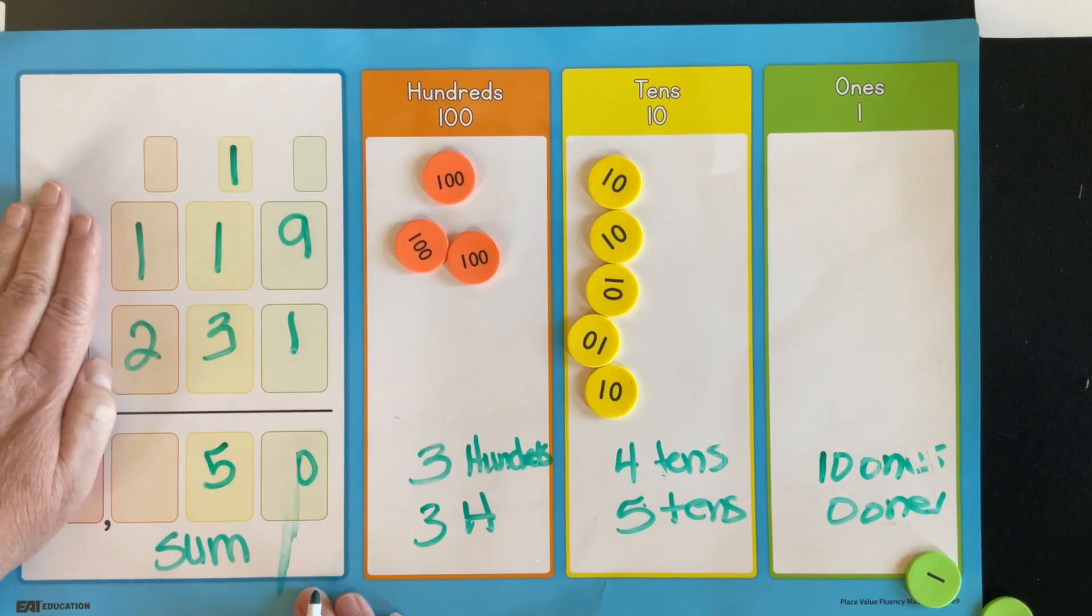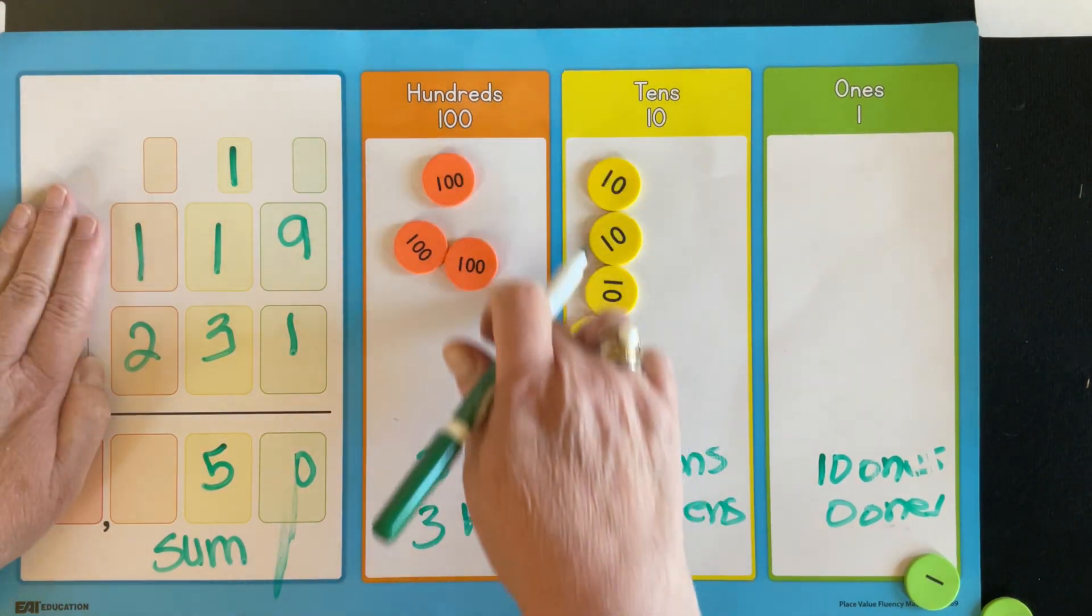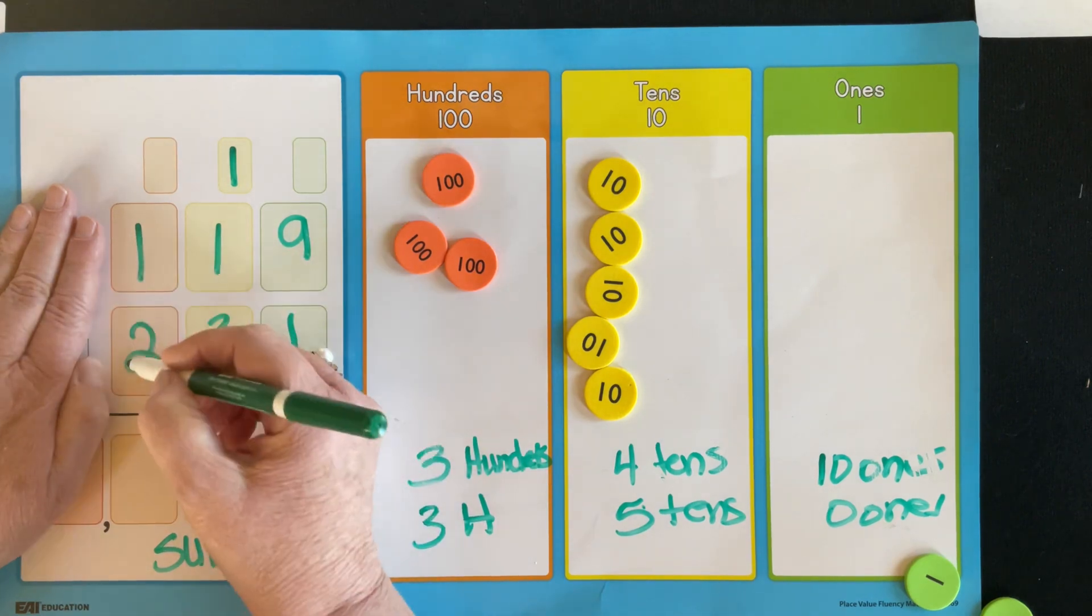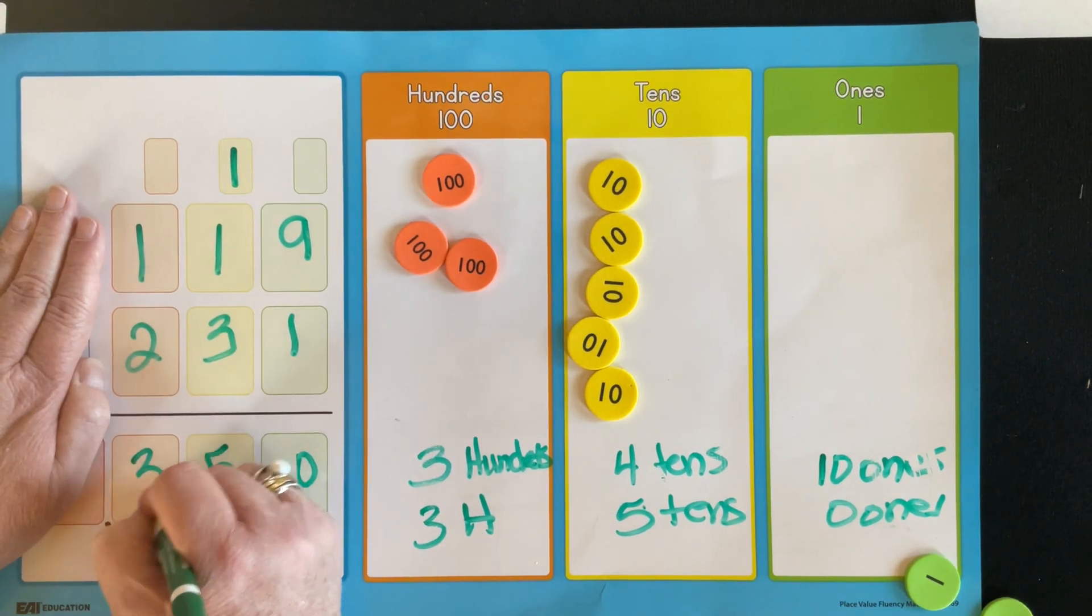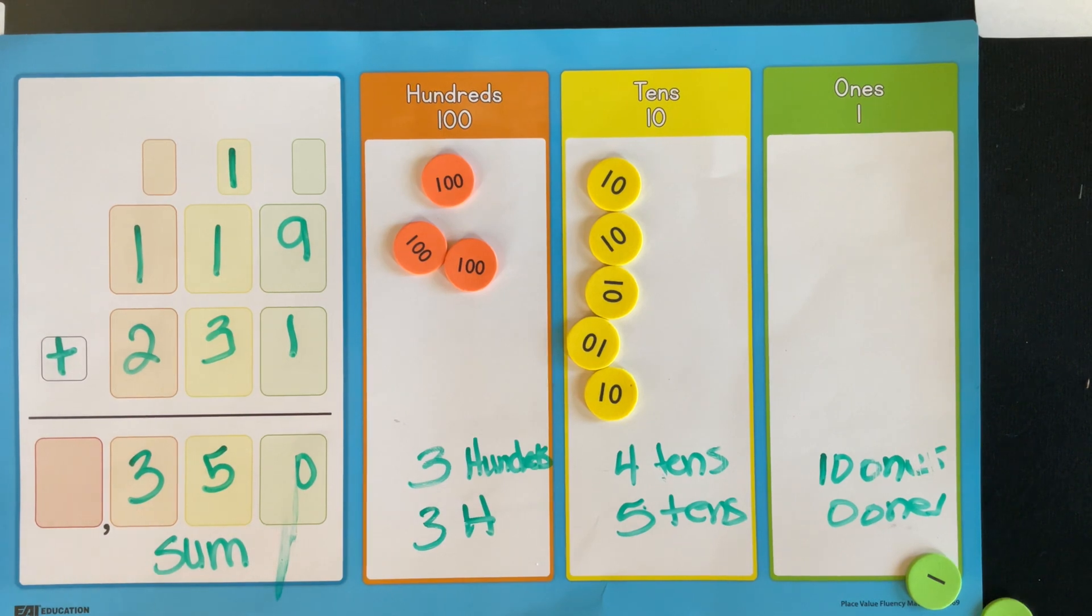Now let's add our orange column, which is our hundreds column. One 100, two, three hundreds. So this answer then is 350.